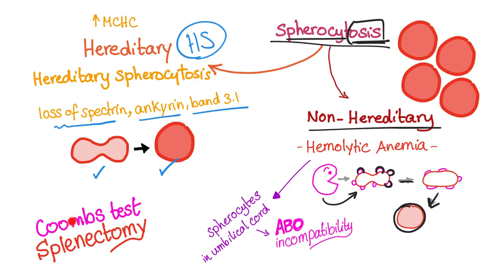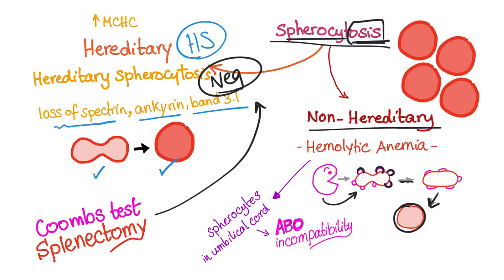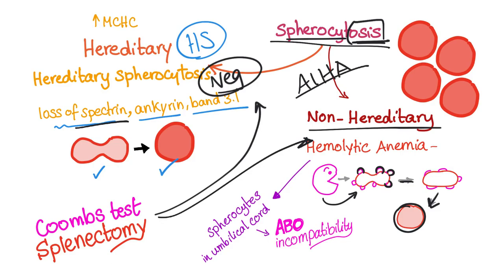What about the Coombs test in hereditary spherocytosis? It will be negative, because in hereditary spherocytosis the problem is genetic — there is no antigen-antibody reaction. However, in hemolytic anemia cases such as autoimmune hemolytic anemia, cold agglutinin disease, or drug-induced hemolytic anemia, the Coombs test will be positive.